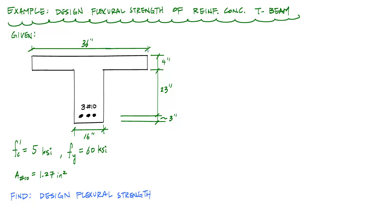I have some dimensions. The flange width is 36 inches, the total height of the section is 30 inches, and the depth to steel from the extreme compression side is 27 inches. The material properties have FC prime of 4 KSI, FY or grade 60 steel with FY equals 60 KSI. I have three number 10 bars to represent my area of steel. That area of steel, AS, is just 3 times 1.27 inches squared, which is going to be 3.81 inches squared.